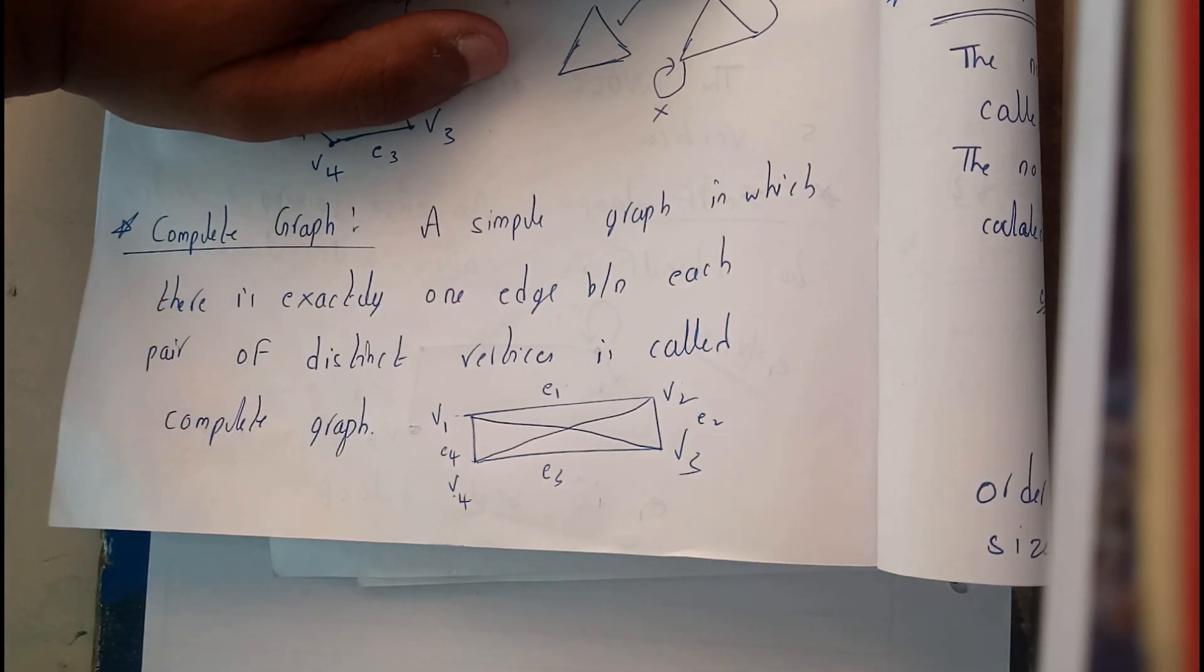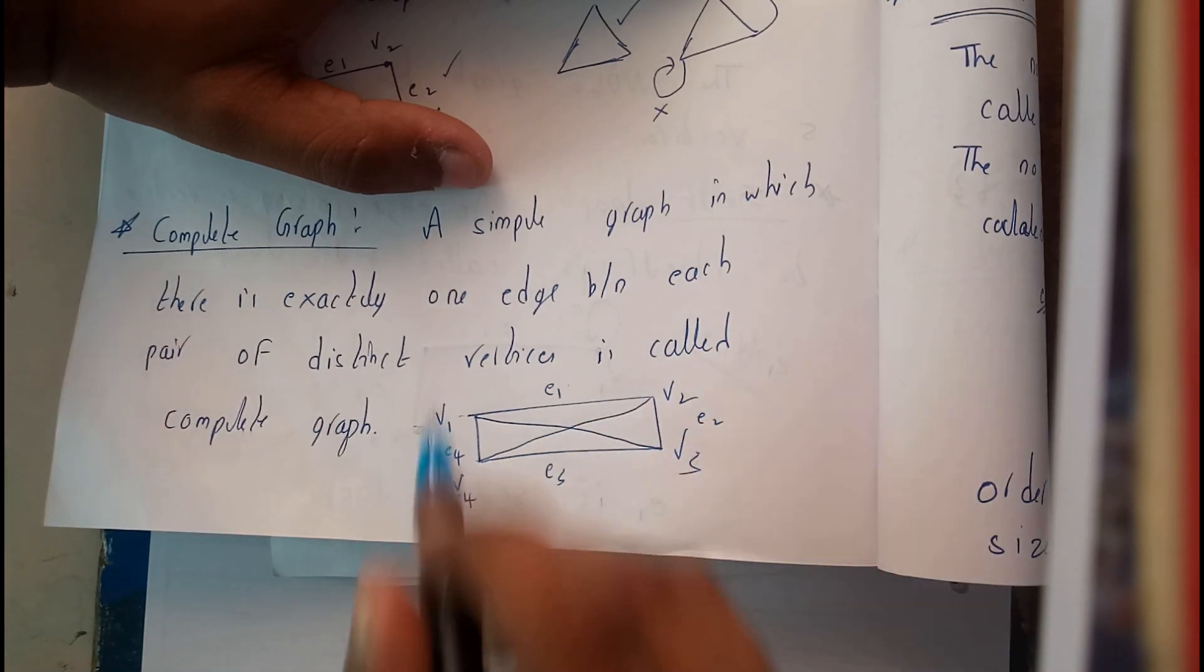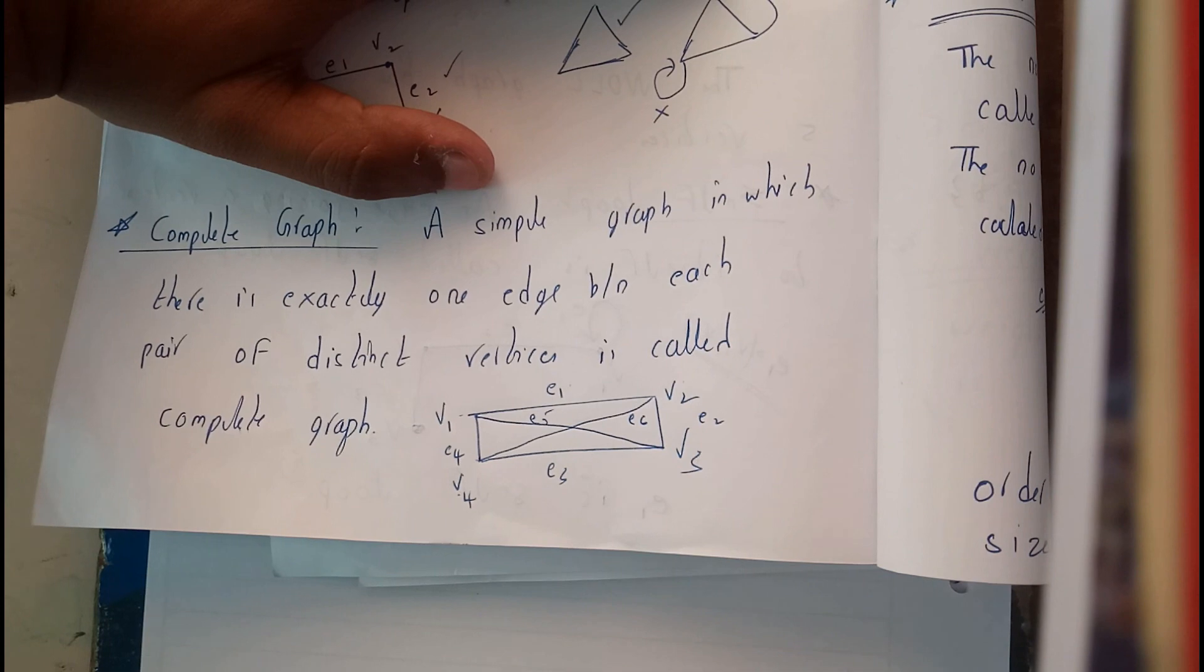So let us take an example: v1, v2, v3, v4 be the vertices and e1, e2, e3, e4, e5, e6 be the edges.